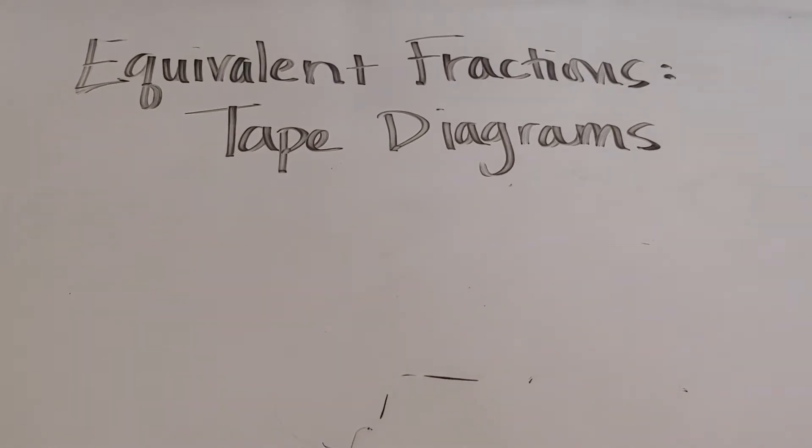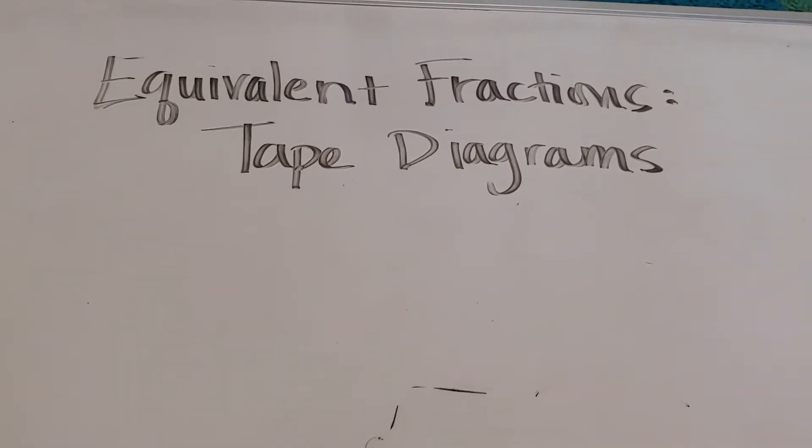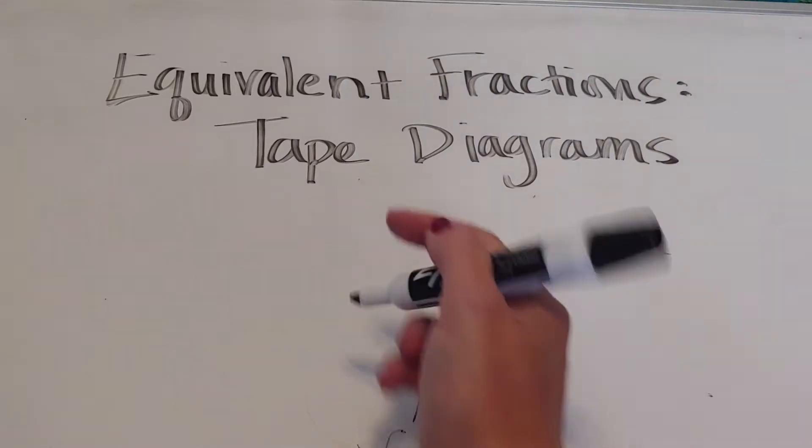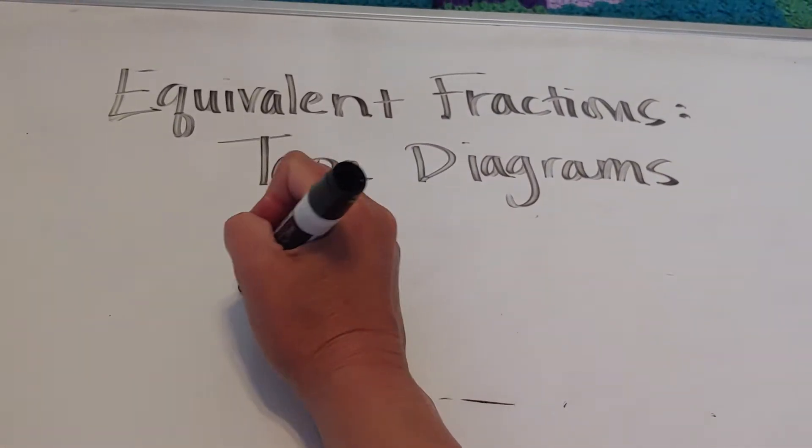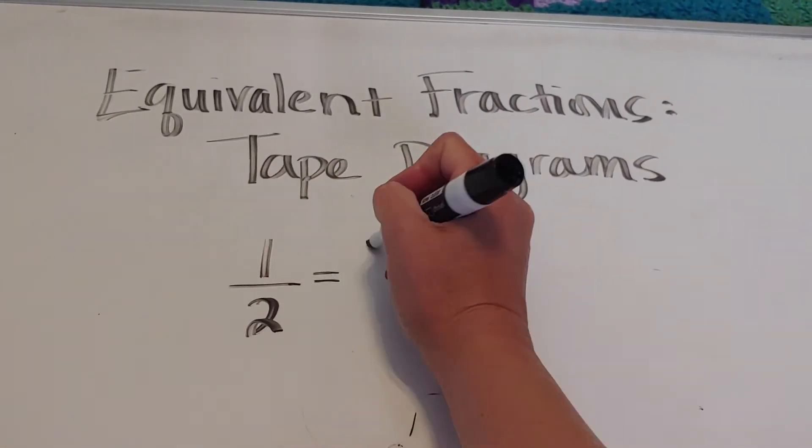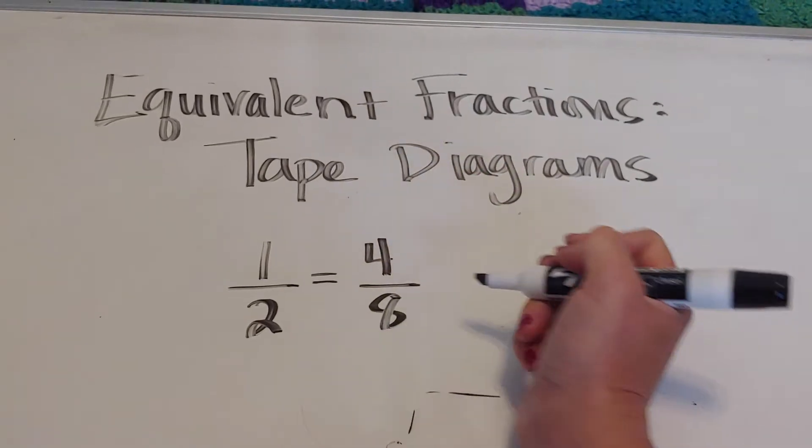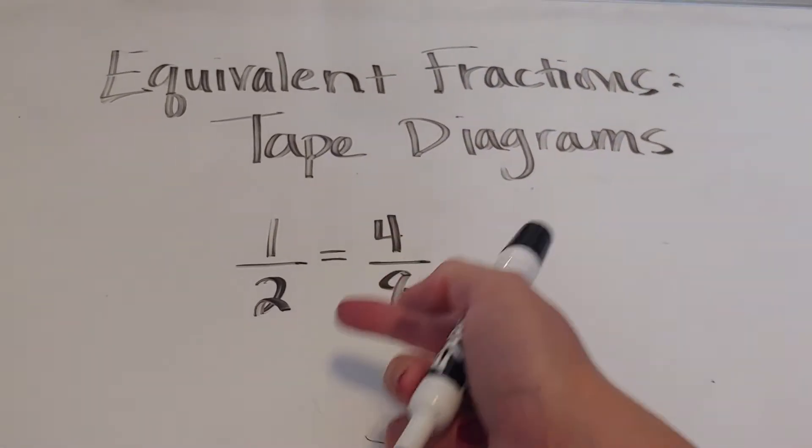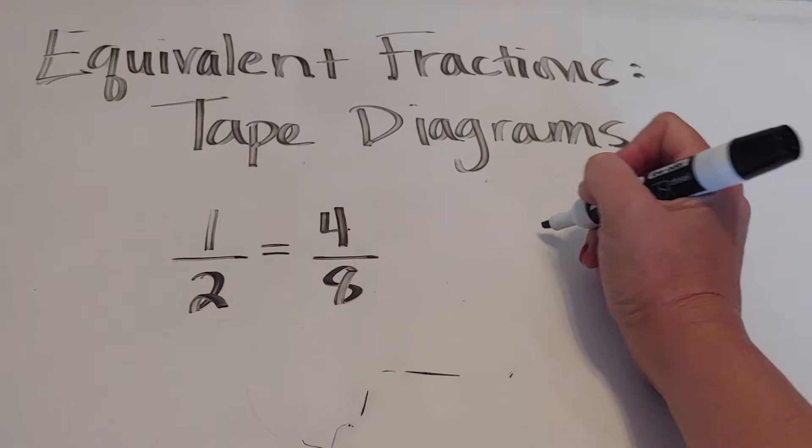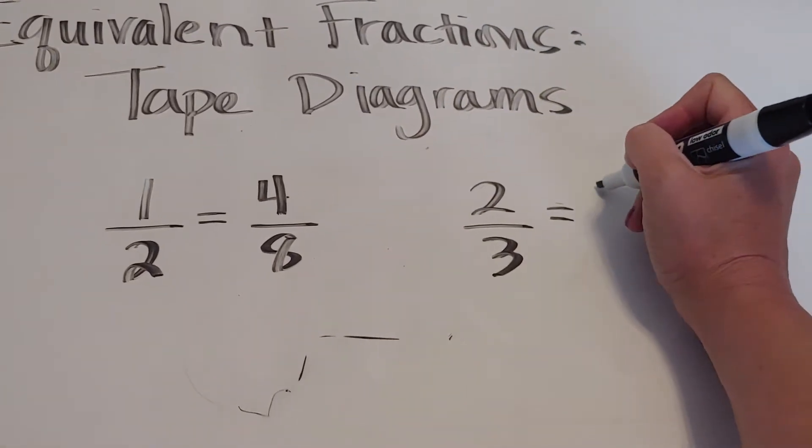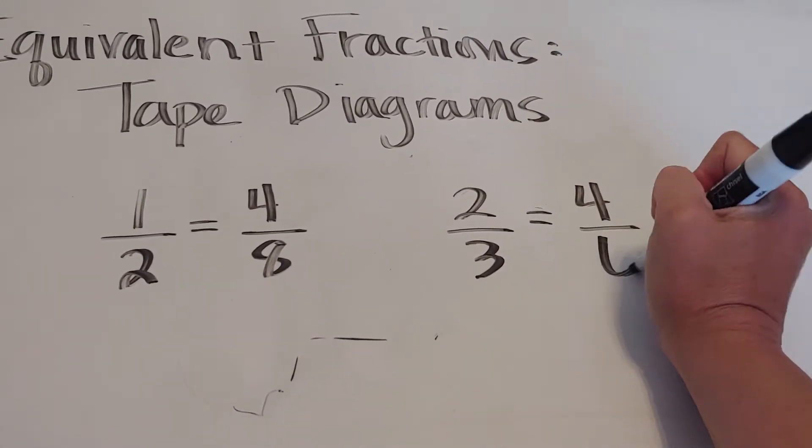In this video we're going to look at equivalent fractions and showing how to do this using tape diagrams. Equivalent fractions are fractions that are the same amount but have different numbers representing them. For example, 1 half is equal to 4 eighths and 2 thirds is equal to 4 sixths.